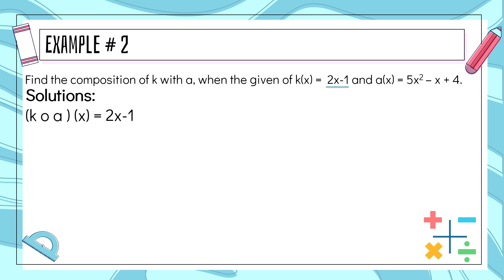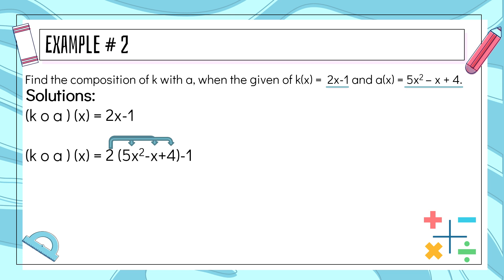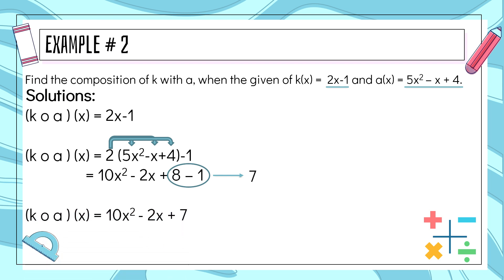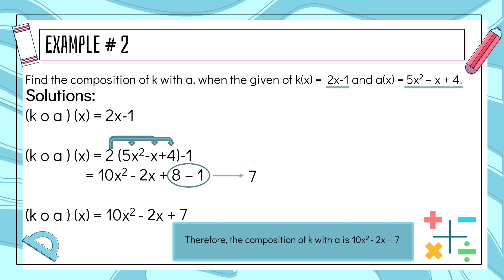Next, we find the x and replace it with the second function, which is 5x squared minus x plus 4. Now we have 2 parenthesis 5x squared minus x plus 4 minus 1. Distribute 2 to 5x squared, 2 to negative x, and 2 to positive 4. So 2 times 5x squared is 10x squared, 2 times negative x is negative 2x, and 2 times positive 4 is positive 8, then copy negative 1. Combine like terms: 8 minus 1 is 7. Our answer is 10x squared minus 2x plus 7. Therefore, the composition of k with a is 10x squared minus 2x plus 7.